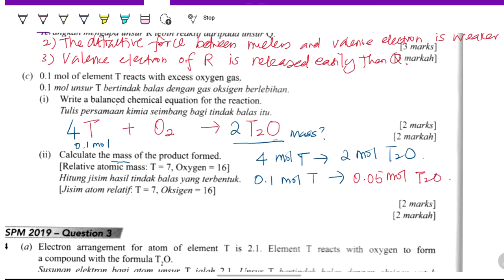If we want to find the mass of T2O, we have to use the mole, 0.05 mole, times the molar mass. T2O: T is 7, so 7 times 2, plus O is 16. Use the calculator to calculate. You will get 0.05 times 30, so you will get 1.5 gram. This is the answer.